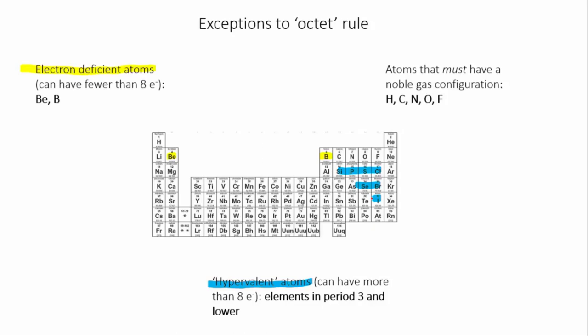Then finally we have the atoms that must have a noble gas configuration, which are hydrogen which needs 2, and carbon, nitrogen, oxygen and fluorine which all need 8.